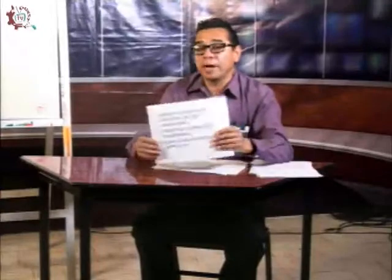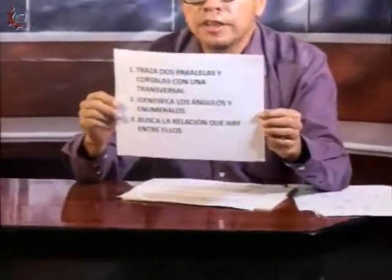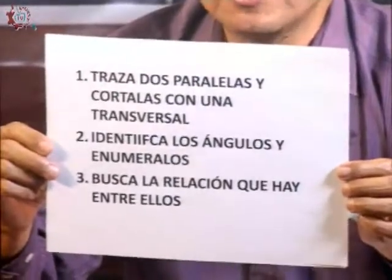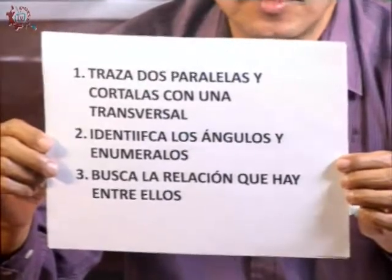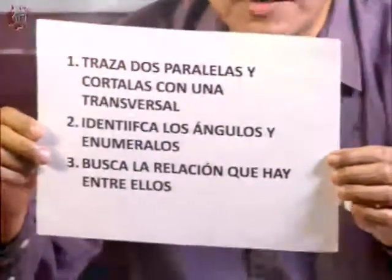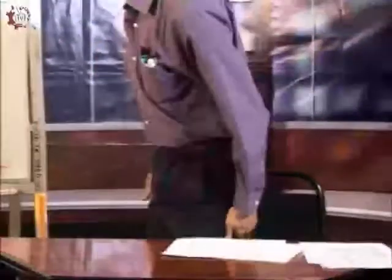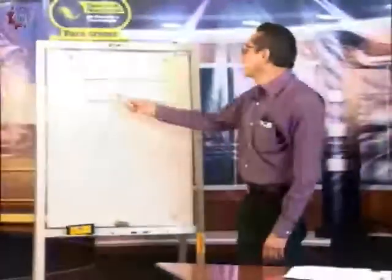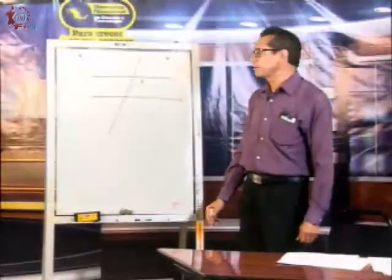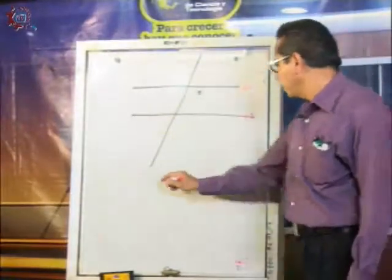¿Qué vamos a hacer? ¿Qué vamos a desarrollar? Conjuntamente vamos a hacer una actividad. Para ello lo que necesitas hacer es lo siguiente, aparte de que debes tener tu juego geométrico: trazar dos paralelas cortadas por una transversal. Recuerden que las paralelas son líneas rectas que nunca se unen y además guardan una proporción entre ellas. Identificar los ángulos y enumerarlos. Posteriormente, buscar la relación que hay entre ellos. Eso es lo que vamos a hacer. Vamos acá al pizarrón. Aquí están las dos rectas, las podemos llamar L1, L2. Son dos rectas paralelas. Y la transversal o secante, vamos a llamarla L3.